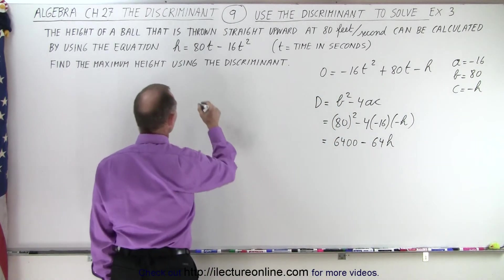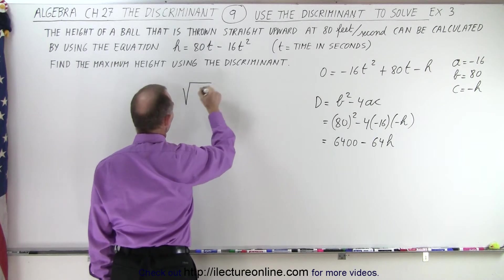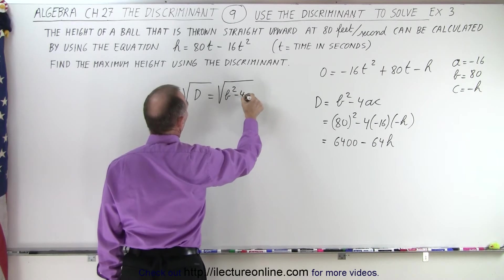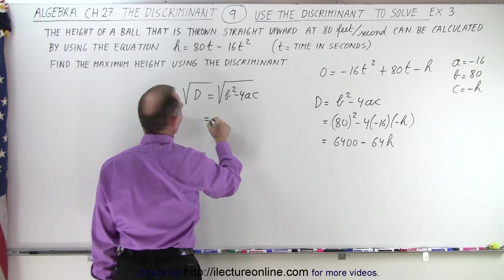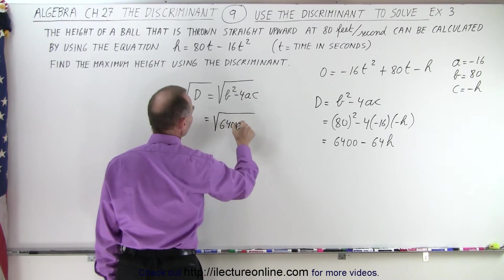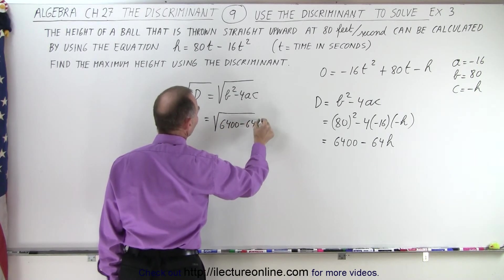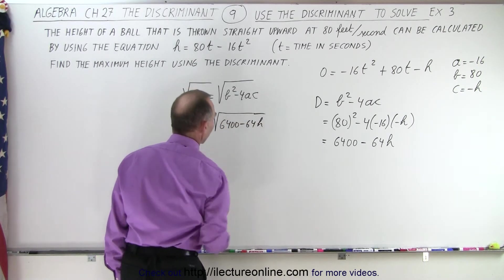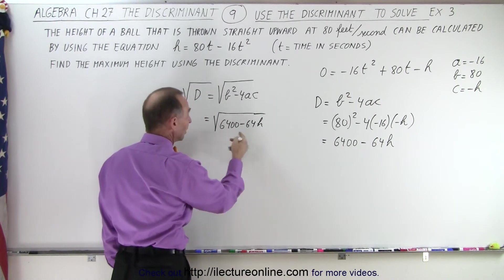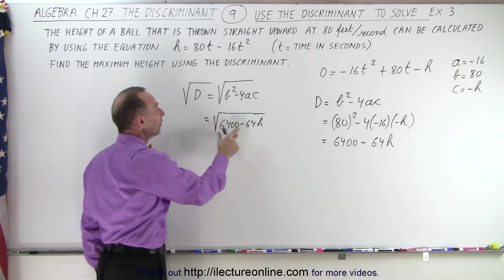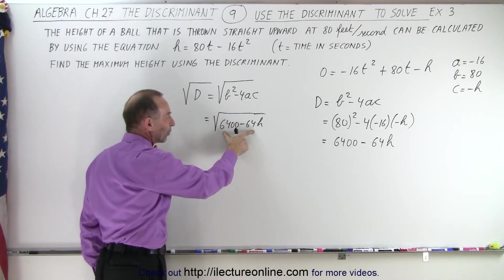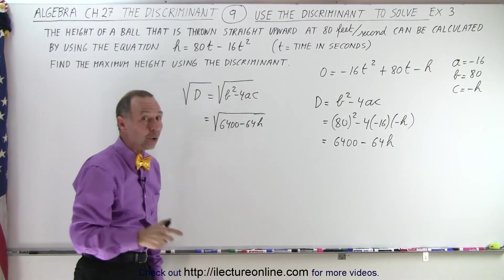Now remember that the discriminant is part of this. So the square root of D equals the square root of b² - 4ac, and so this is equal to, in this case, the square root of 6400 - 64h. Obviously, the only way we can get a real solution is if what's inside the radical has to be greater than or equal to 0.